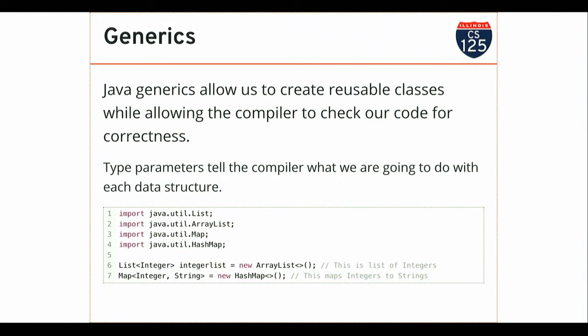On the right side, this is something new as of Java 8 — it's called the diamond operator. What the diamond does is allow you to avoid repeating yourself. You could write 'new ArrayList<Integer>' and repeat the type, but the Java compiler is smart enough to figure out that if your variable is a list that stores integers, your implementation is probably also an ArrayList that stores integers. This is called type inference — the compiler infers the type of the right side from the left side.